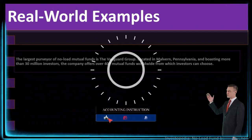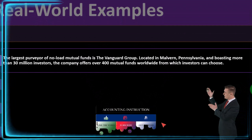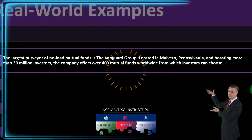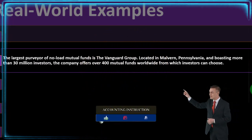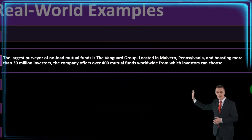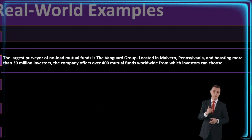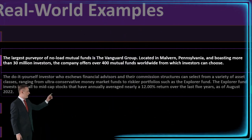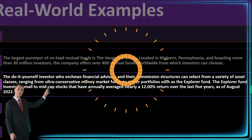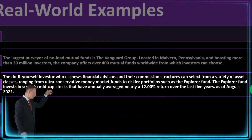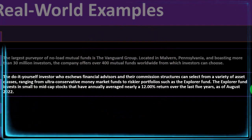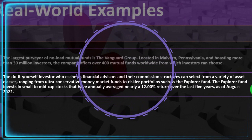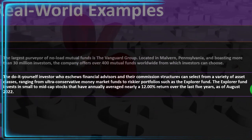The largest purveyor of no-load mutual funds is the Vanguard Group, located in Malvern, Pennsylvania, and boasting more than 30 million investors. The company offers over 400 mutual funds worldwide from which investors can choose. The do-it-yourself investor who eschews financial advisors and their commission structure can select from a variety of asset classes ranging from ultra-conservative money market funds to riskier portfolios.